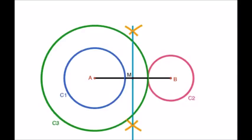With M as center and radius equal to MB, draw a circle passing through the points A and B. Name this circle as C4.